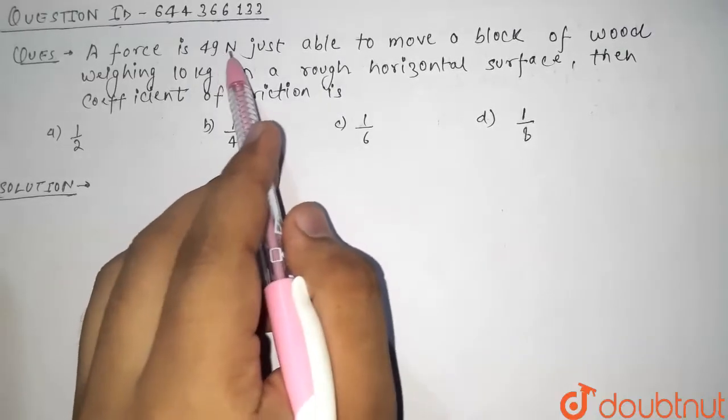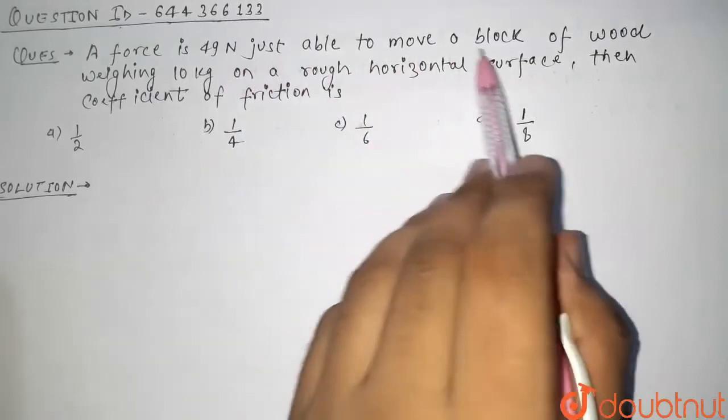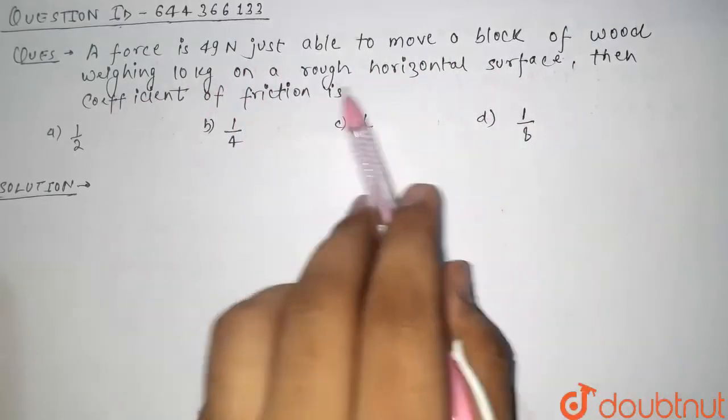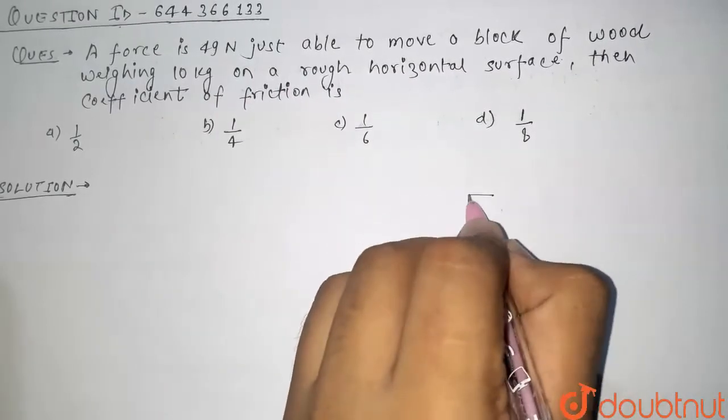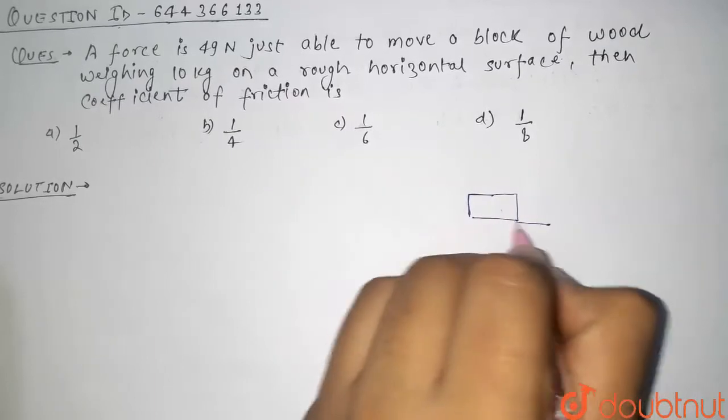A force of 49 newtons is just able to move a block of wood weighing 10 kg on a rough horizontal surface. Find the coefficient of friction. So guys, see here this is our block and this is our surface.